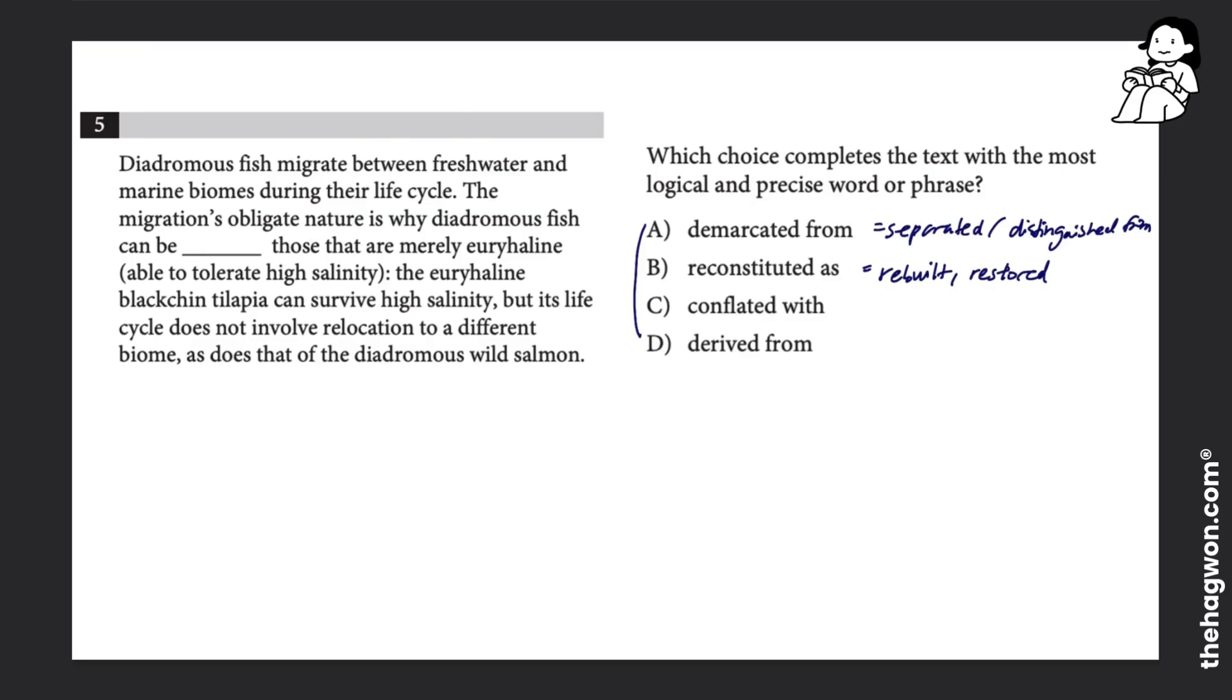Answer choice C, conflated with, means to be combined with. So when two different things are combined together, they are conflated. A is conflated with B means A and B have been combined together.